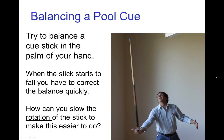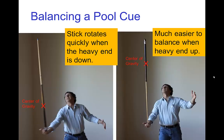But there's a trick that you can do to make the cue stick actually rotate slowly, and that is if instead of holding the cue stick with the heavy end down, if you hold it with the heavy end as high as possible, then the cue stick actually rotates more slowly and that makes it easier to adjust your positioning and to keep it in balance.